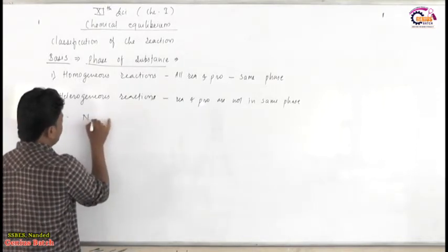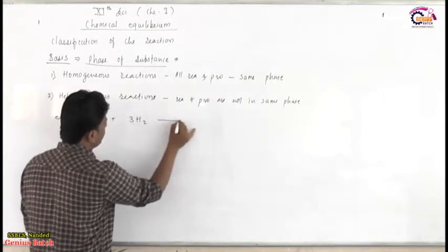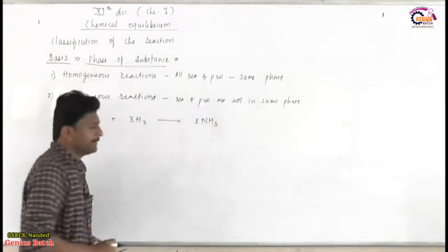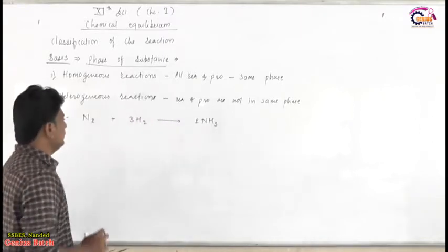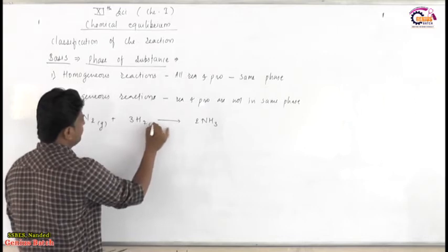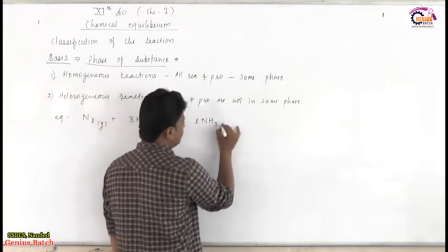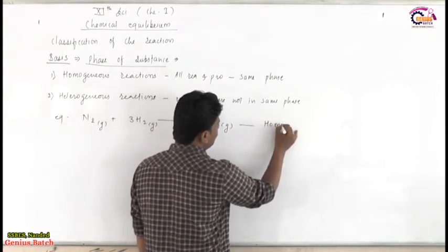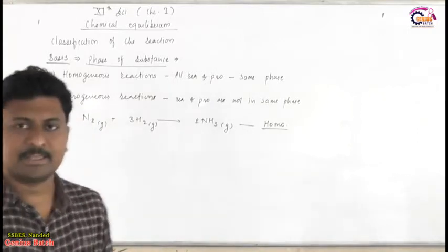Suppose N2 plus 3H2 is converted to 2NH3. This is the reaction. If you check the phase, we know nitrogen is gaseous, hydrogen is gaseous. The product NH3, which is ammonia, is again gaseous. So, this one is a Homogeneous Reaction, because all the components are present in the gas phase.